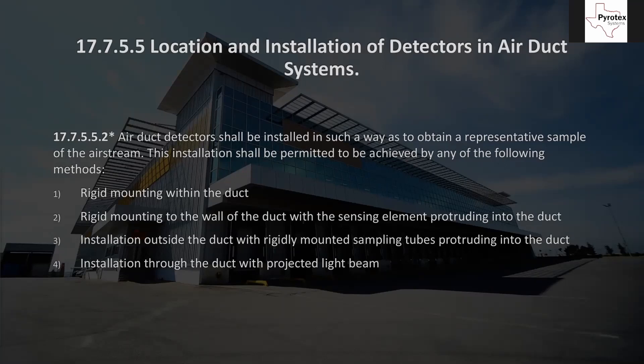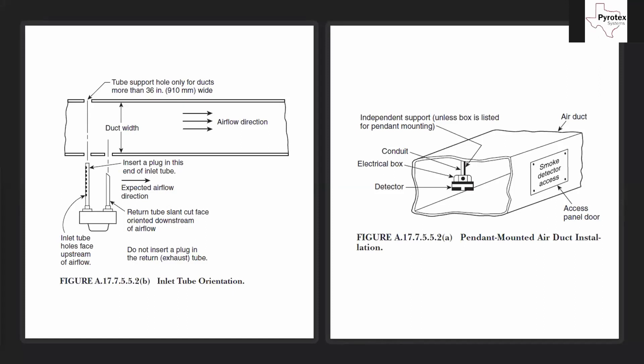Mounting to the wall of the duct with the sensing element protruding is similar to mounting to a ceiling or wall of a building — just now it's the ceiling or wall of the duct. Another method is installation outside the duct with rigidly mounted sampling tubes protruding into the duct — this is the way we usually do it, as it's the most straightforward, easiest to service. The last method is installation through the duct with a projected light beam — essentially a beam detector inside a duct.